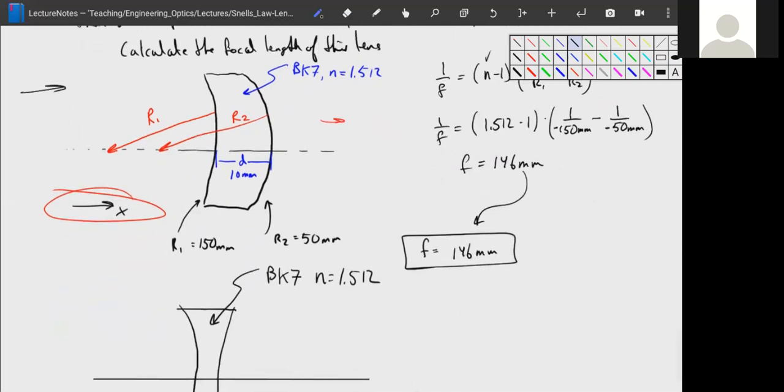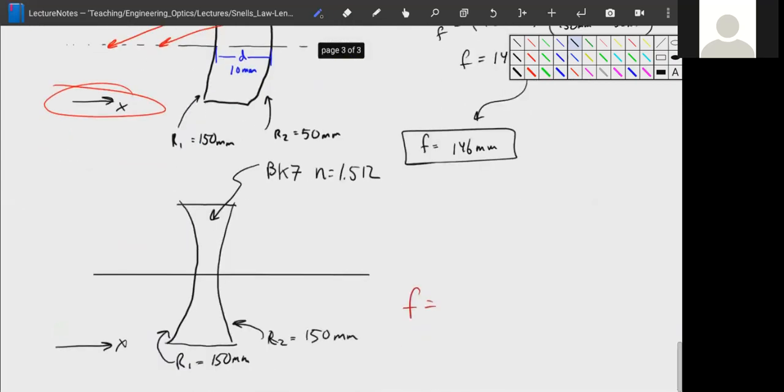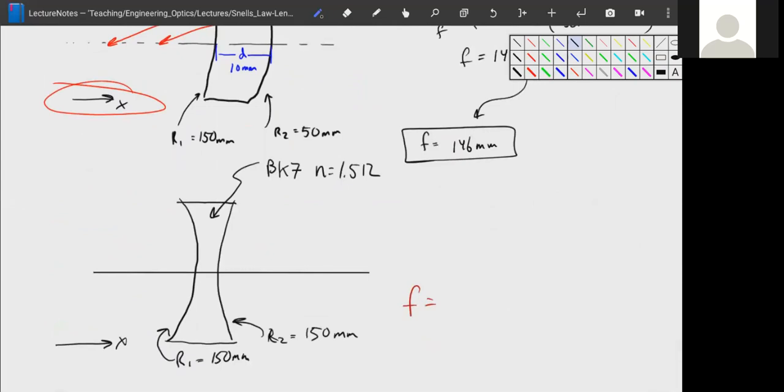Let's do another example that highlights again the direction that these radii are in. So we have now a negative focal length lens and we have the two radii of curvature that are the same, 150 millimeters and 150 millimeters, and it's still the same material BK7. So what we're going to do is draw an arrow from the curved surface towards the center for both of them. Now the one on the left points in the negative direction, the one on the right points in the positive direction.